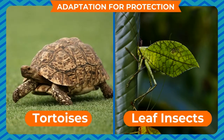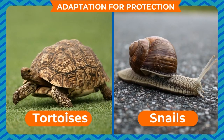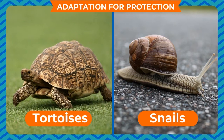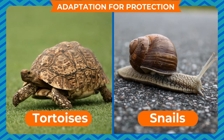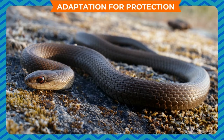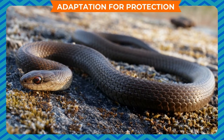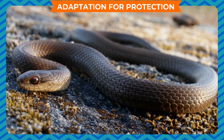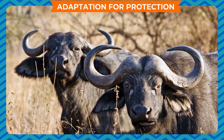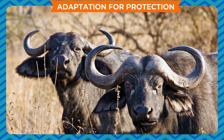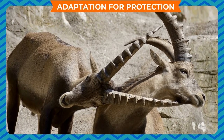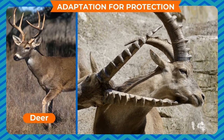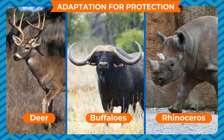Some animals such as tortoises and snails have hard shells on their bodies for their protection. Some animals like snakes protect themselves by pretending to be dead when they are in danger. Some animals have strong horns. When they see any opponent, they use their horns to fight. Deer, buffaloes, rhinoceros, etc. have horns.